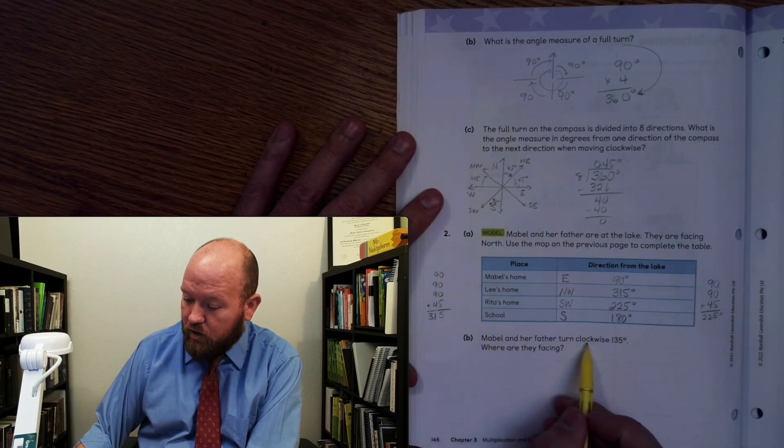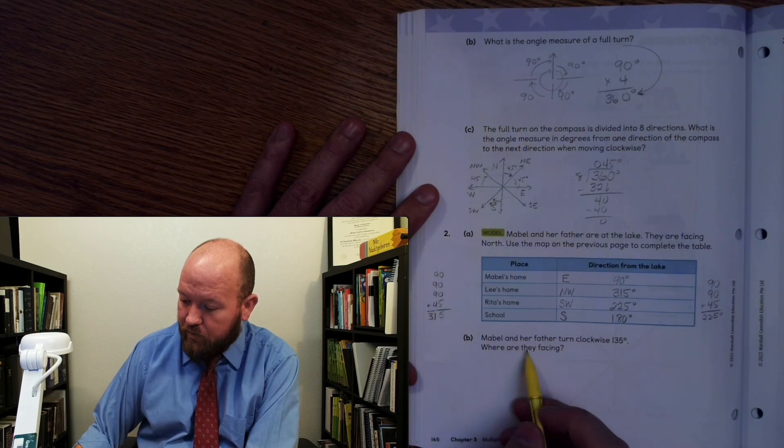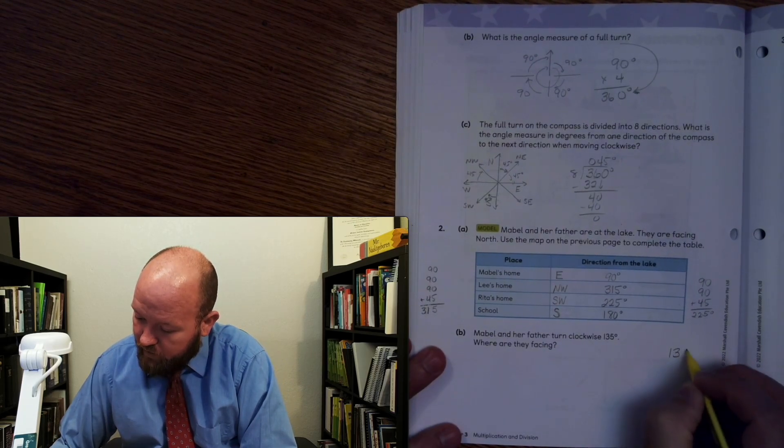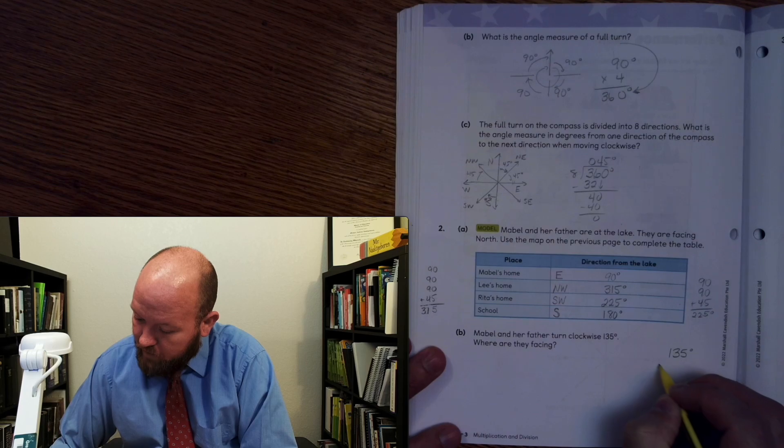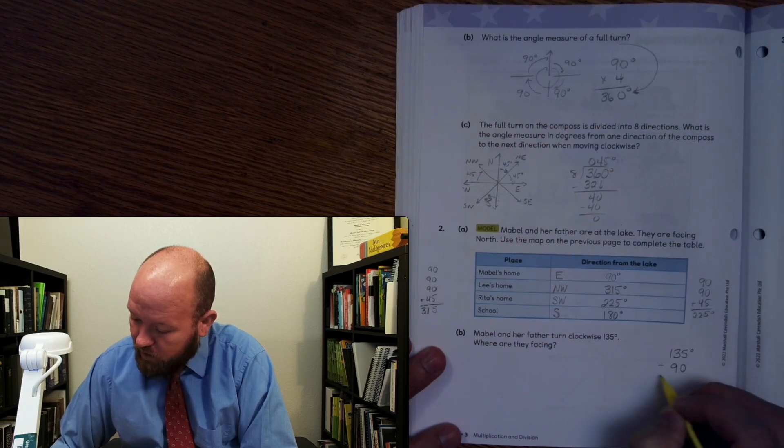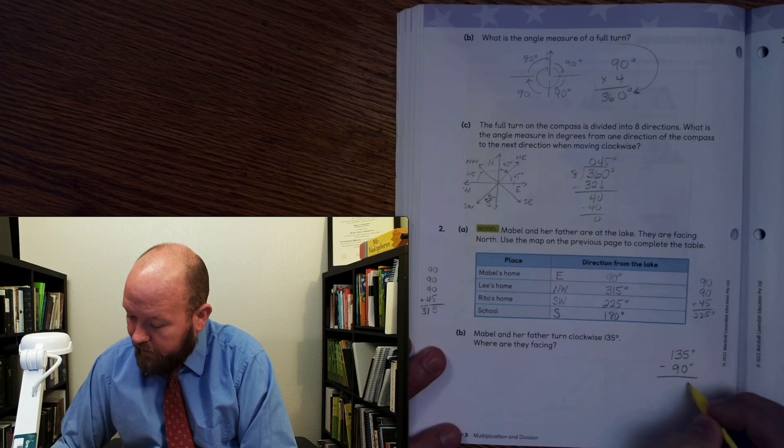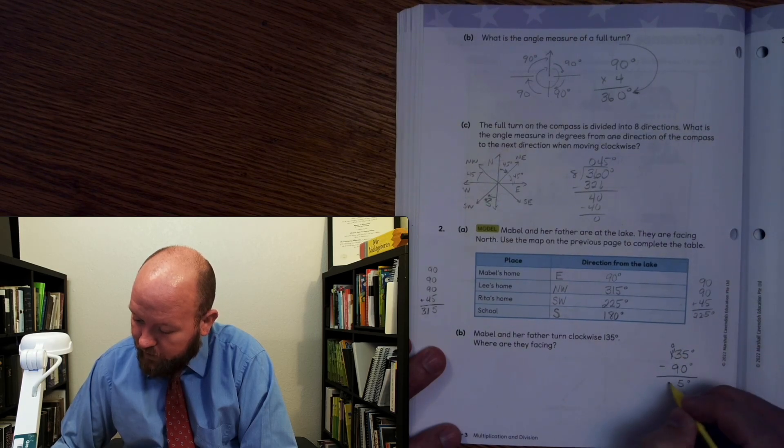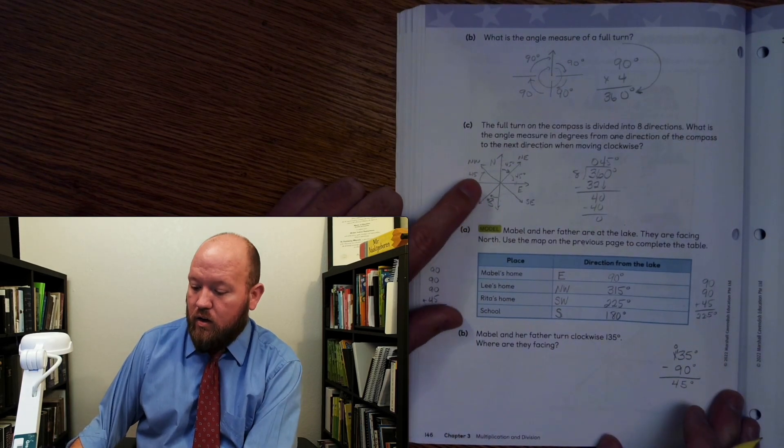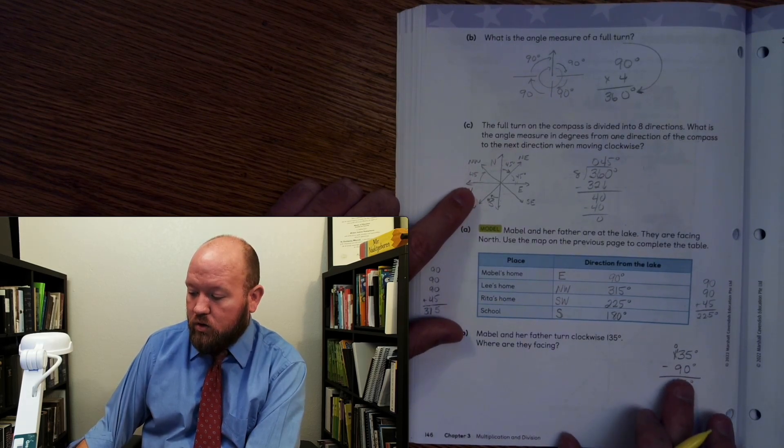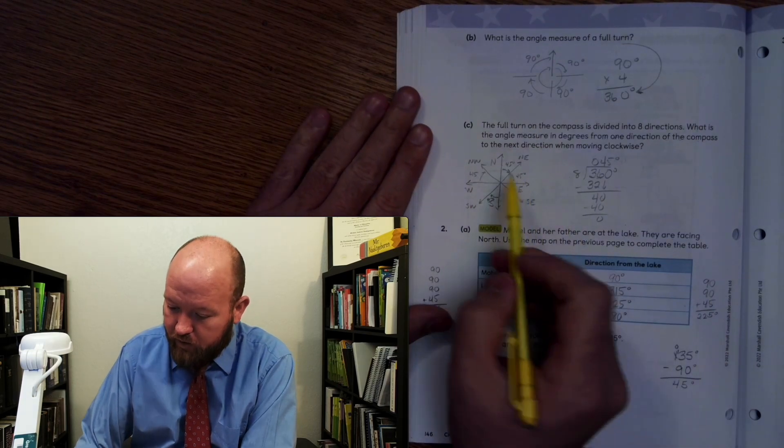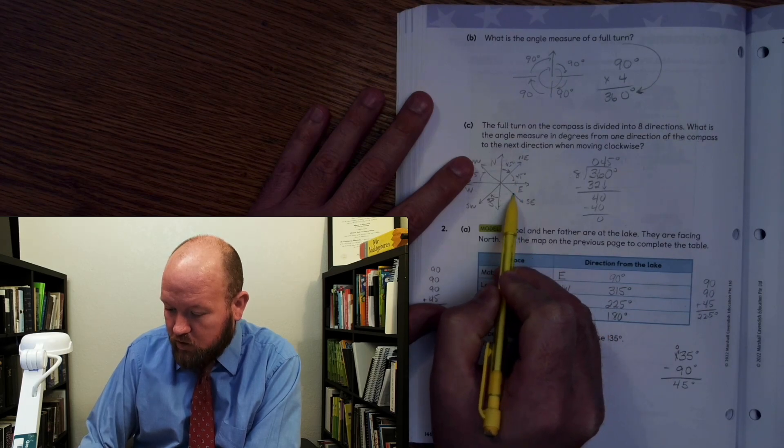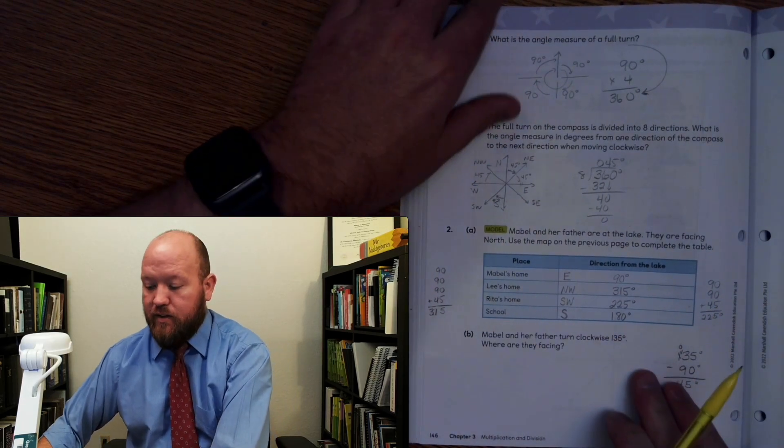Now Mabel and her father turn clockwise 135 degrees. Where are they facing? All right. So 135 degrees minus 90 degrees. So I want to see if I can get turnout. All right. So 5 minus 9 is 5. To regroup. This comes to 0. This comes to 13. 13 minus 9 is 45. Okay. So they're going to turn, they're going to turn one 90 degree turn, and then half of a 90 degree turn. So we're going to go from north. They're going to turn. They're going to be facing east. They're going to turn one more.